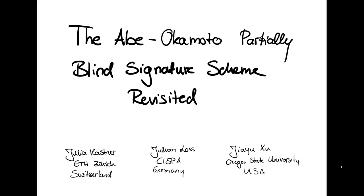Hello, welcome to the short video presentation about the paper The Abe Okamoto Partially Blind Signature Scheme Revisited. My name is Julia Kastner and this is joint work with Julian Los and Jai Yuxou.